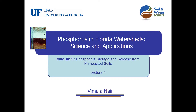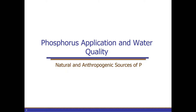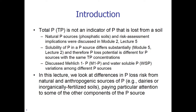In this lecture, we looked at the differences in P release from natural and anthropogenic sources of phosphorus. The difference in P release from these sources would naturally affect the water quality leaving the location. We have seen previously that total P is not an indicator of P that is lost from a soil. Natural P sources such as phosphatic soils and risk assessment implications were discussed in Module 2, Lecture 5. The solubility of P in a P source differs substantially, and therefore P loss potential is different for P sources with the same TP concentrations. We also discussed Mehlich-1 P and water soluble P variations among different P sources.